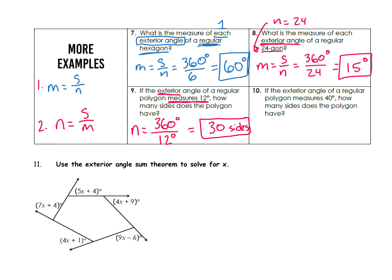The exterior angle of a regular polygon measures 40 degrees — how many sides does that polygon have? The number of sides is equal to the sum divided by the measure of each angle. The exterior angle sum is 360 degrees, and the measure of each angle is 40 degrees. 360 divided by 40 comes out to be 9. There are nine sides to this polygon, and we call that a nonagon.